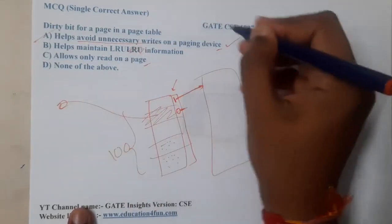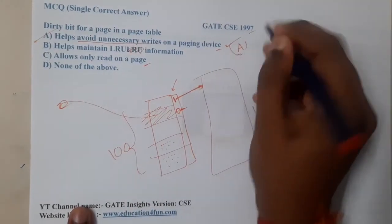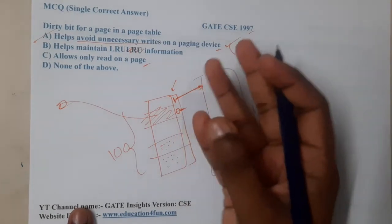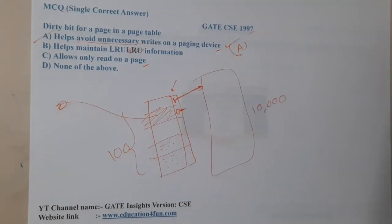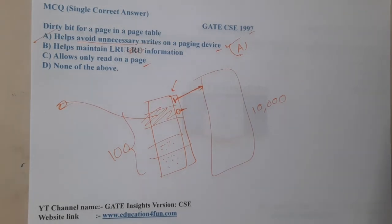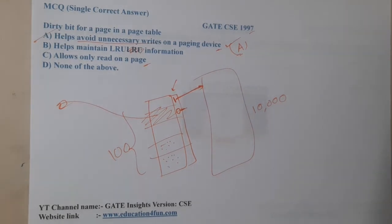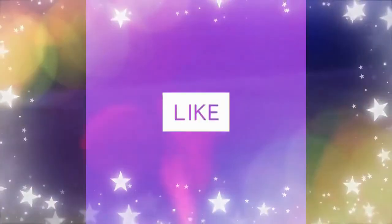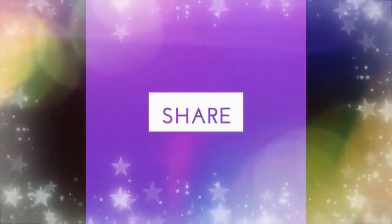So option A is the most appropriate answer. This can be applied in any algorithm — LRU, optimal, etc. I hope everyone got a clear idea. It's a direct theoretical question. In the next lecture, we will continue with the next question. Thank you, thanks for watching — like, share, and subscribe for more awesome videos.